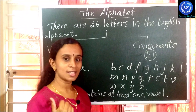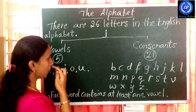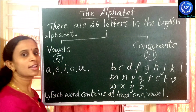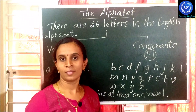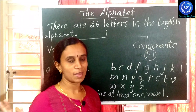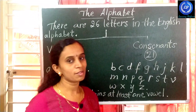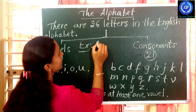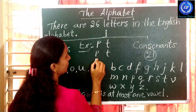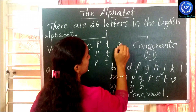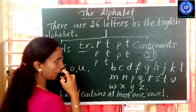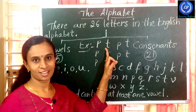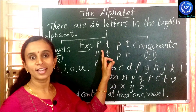Each word contains at least one vowel. Any word you take will have at least one vowel. Without a vowel, no words can be formed. For example, see here: P, T — observe here P, T. Read this — this is not a word, just letters, because there is no vowel here.